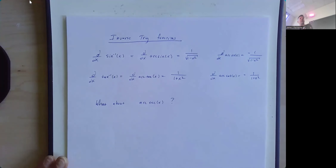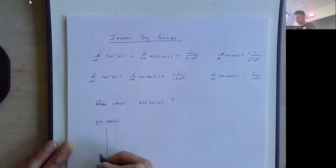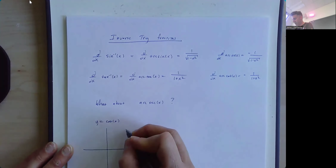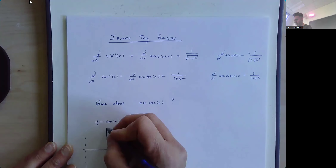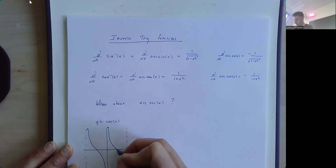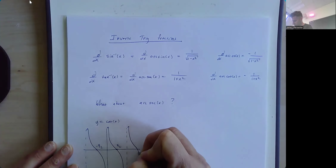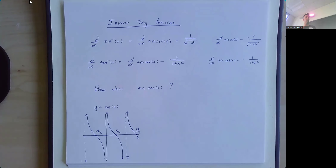For cotangent, the function has vertical asymptotes at 0, pi, negative pi, and every integer multiple of pi. It clearly isn't invertible on its own — it's not one-to-one and doesn't pass the horizontal line test.